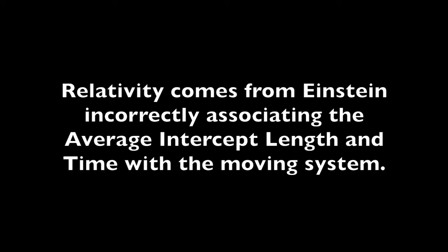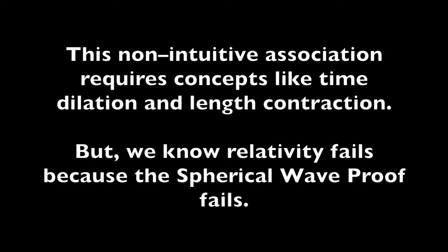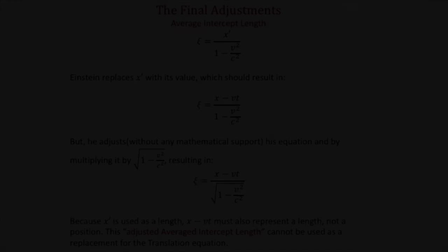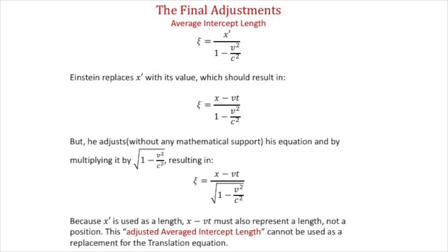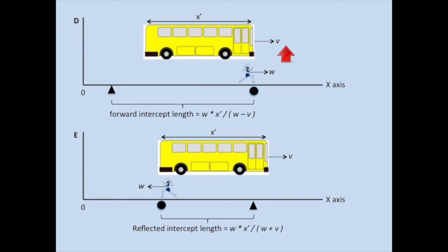Relativity comes from Einstein associating the average intercept length and time equations with the moving inner system. This forced relationship is also why relativity requires concepts like time dilation and length contraction — simply Einstein's attempt to make sense of something that is fundamentally wrong. Because these aren't Einstein's final equations, he adjusts all of his equations by multiplying everything by the square root of (1 minus v squared over c squared). This is how he arrives at his final equations and why he believes his theory is a replacement for classical mechanics.